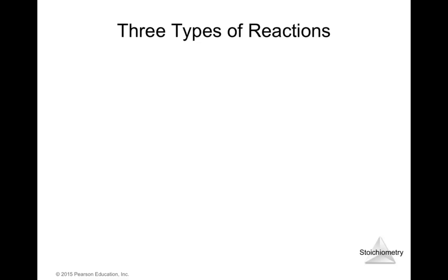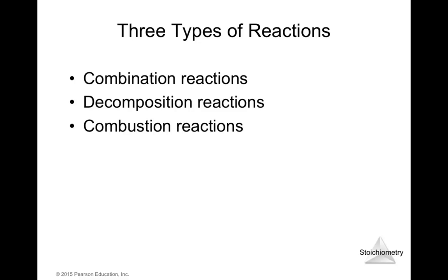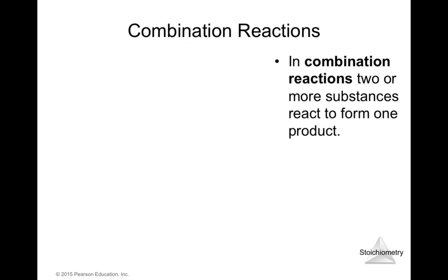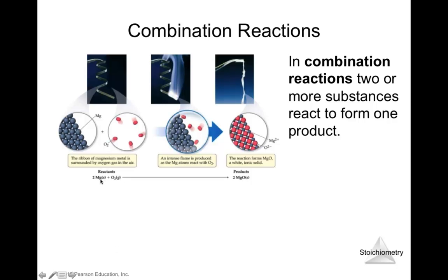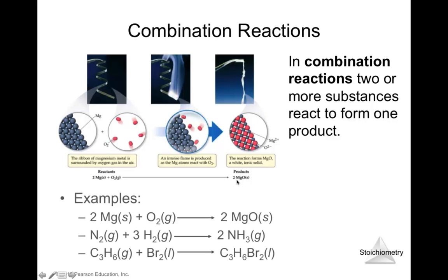There are three types of chemical reactions: combination reactions, decomposition reactions, and combustion reactions. Combination reactions occur when two or more substances react to form one product. For example, magnesium plus oxygen produces magnesium oxide. Also, one mole of nitrogen plus three moles of hydrogen produces two moles of ammonia. C3H6 plus Br2 produces one molecule of C3H6Br2 — two reactants combining into one product.